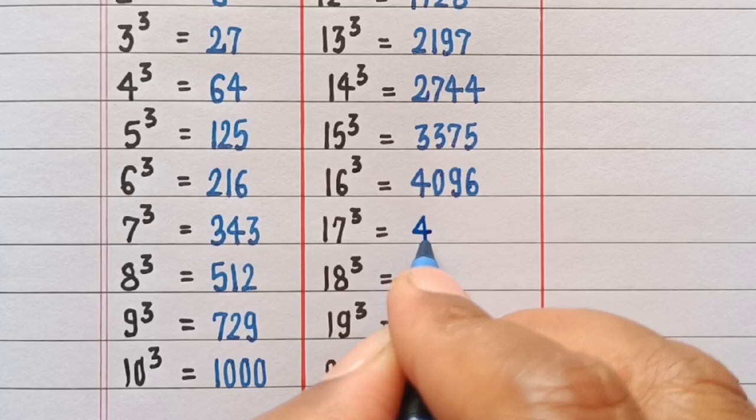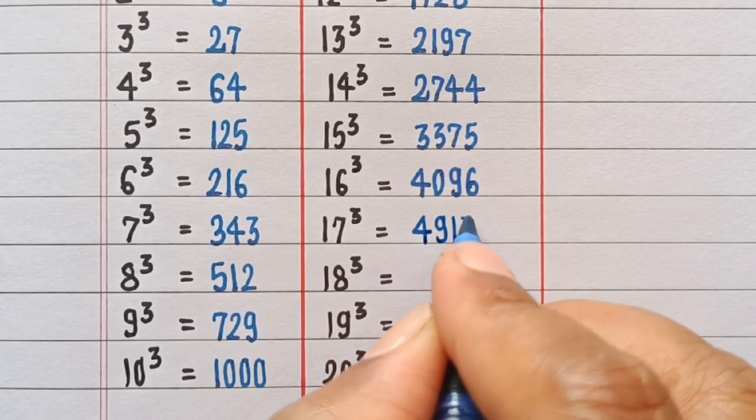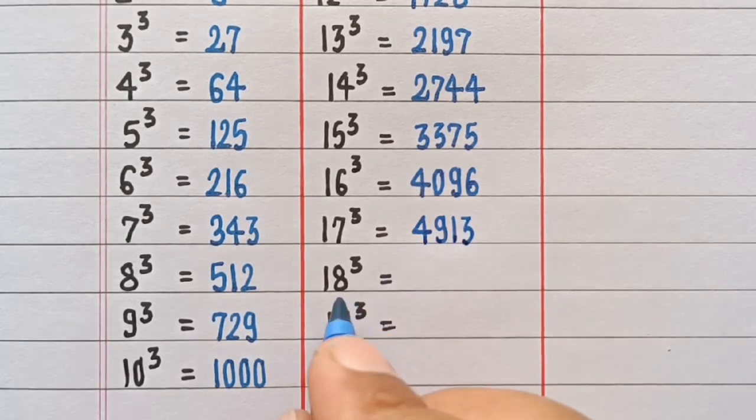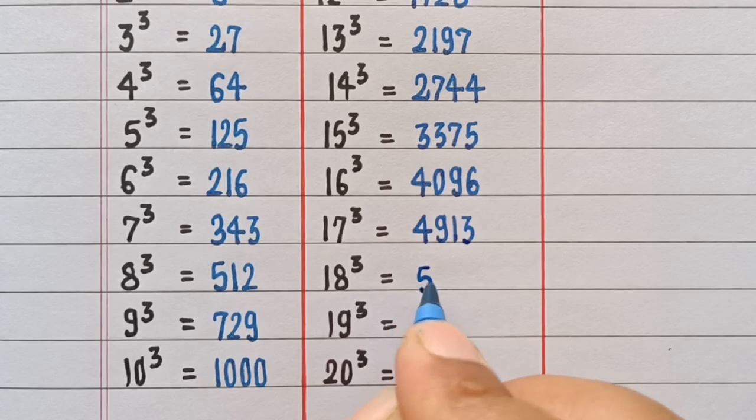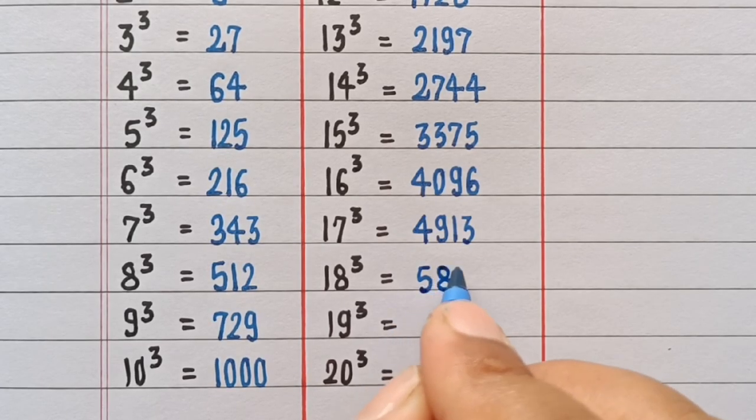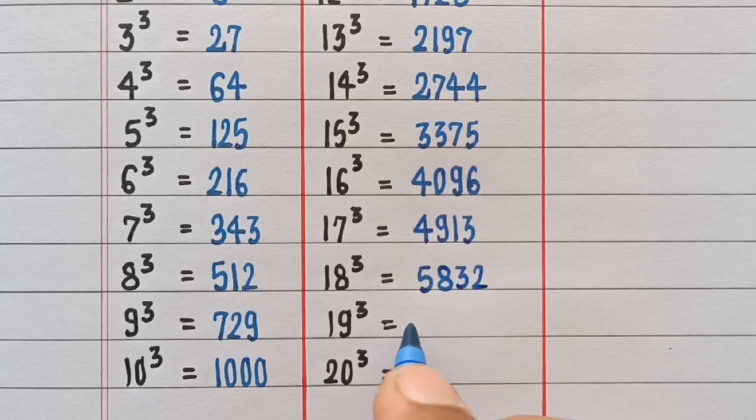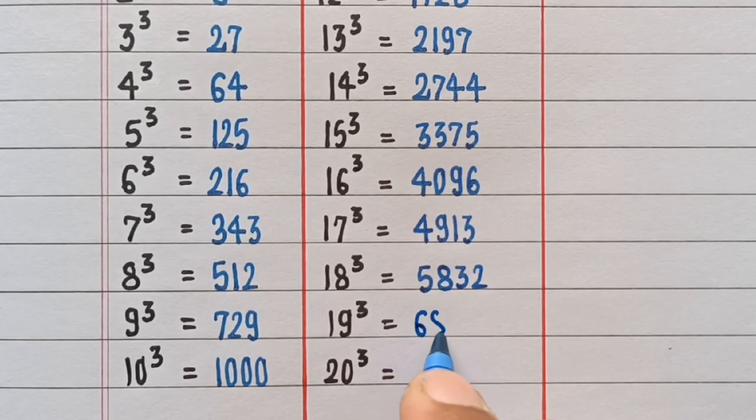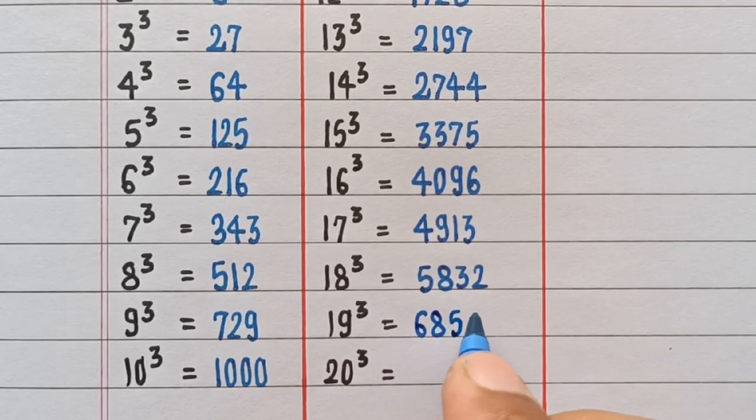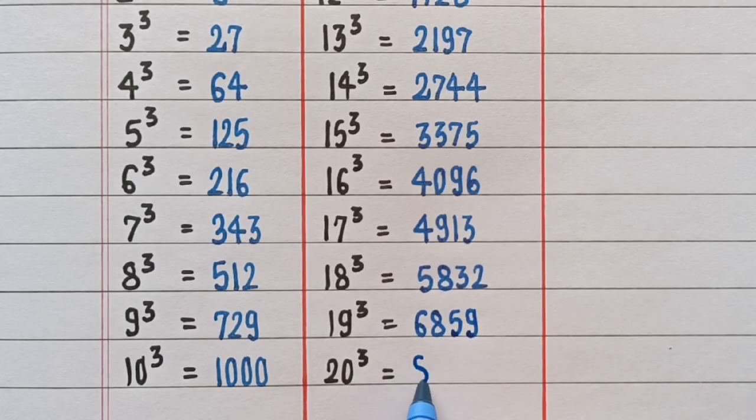Cube of 17 is 4913. Cube of 18 is 5832. Cube of 19 is 6859. Cube of 20 is 8000.